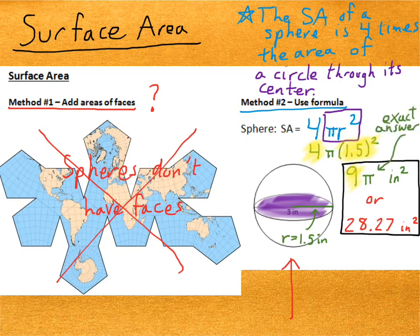The 9 pi is considered an exact answer, because the pi captures all of the decimal places. In fact, pi has an infinite number of decimal places. So, writing it as 9 pi gives us a very exact, precise, accurate answer for the surface area of the sphere.